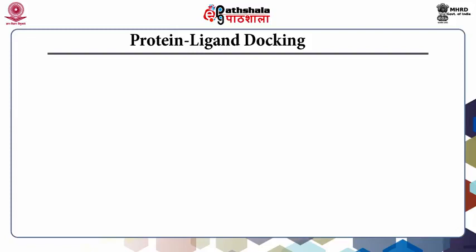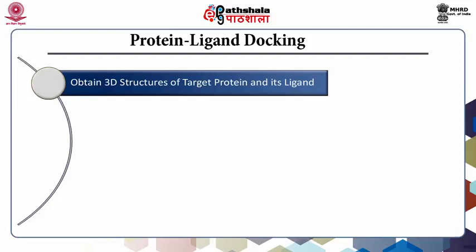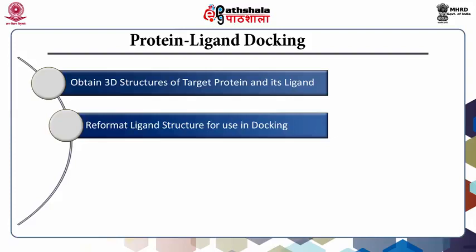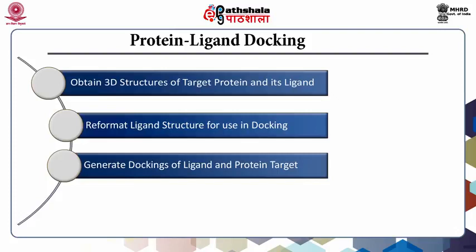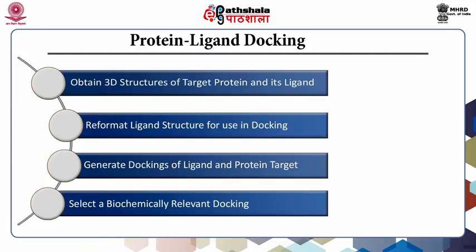Docking of a known ligand such as a substrate with its binding protein such as an enzyme begins with obtaining the three-dimensional structure of the target protein and its ligand. This is followed by reformatting 3D structure coordinates for submission to docking software for producing protein-ligand dockings. Finally, we need to analyze the resulting dockings to select a biochemically relevant docking to understand the interactions of amino acid residues in the enzyme and the chemical groups on the substrate, so as to design alternative molecules for controlling the biochemical activity of the target protein.